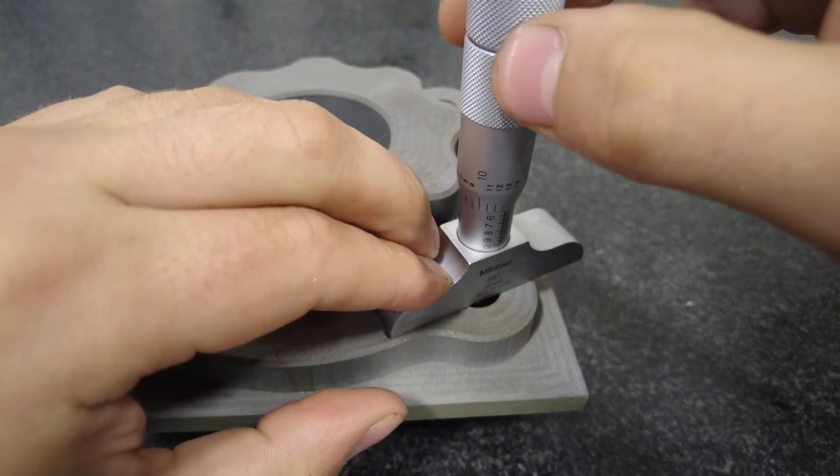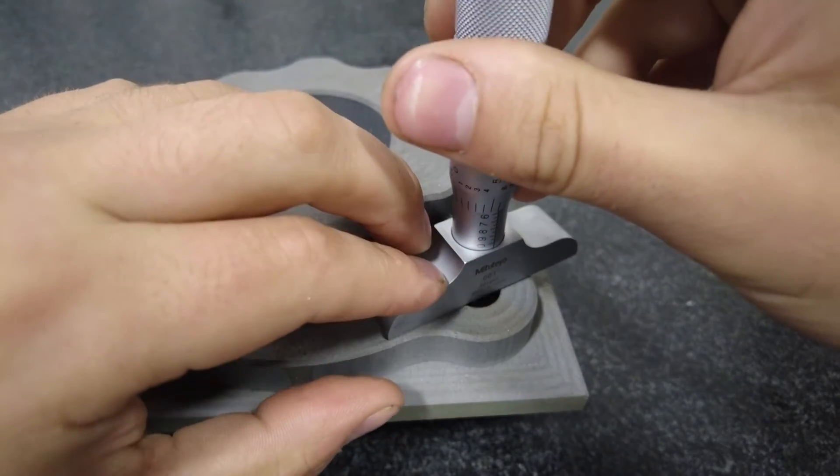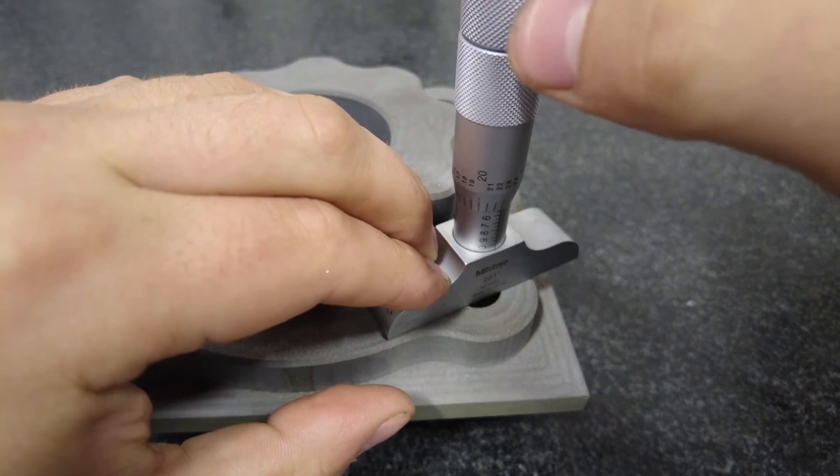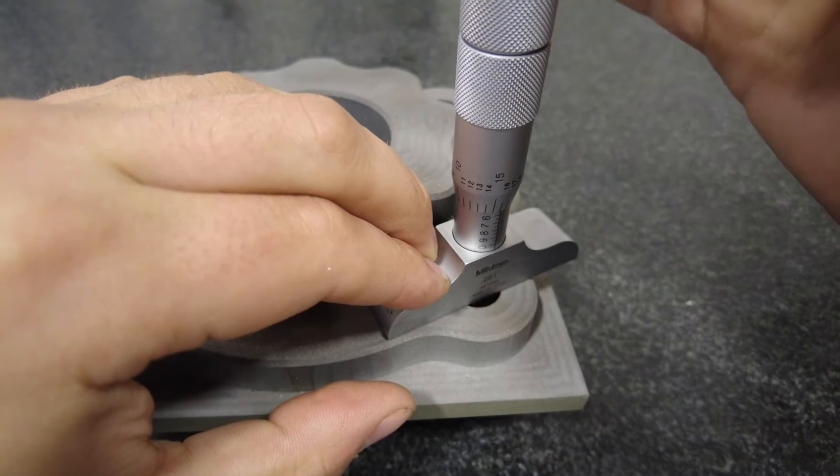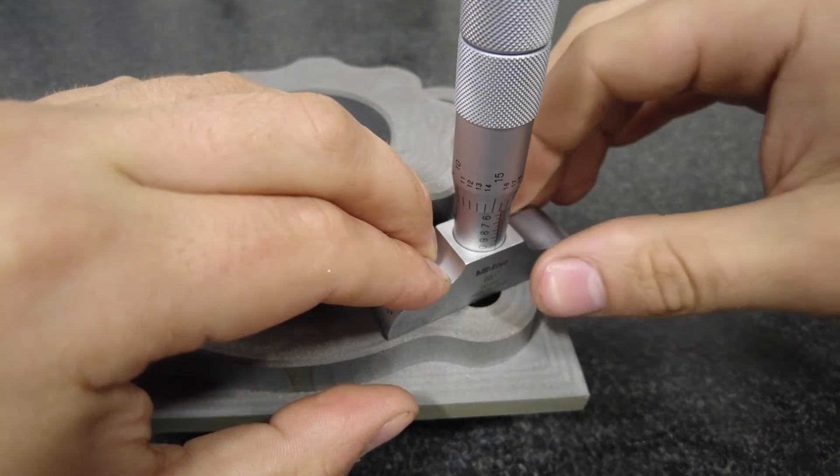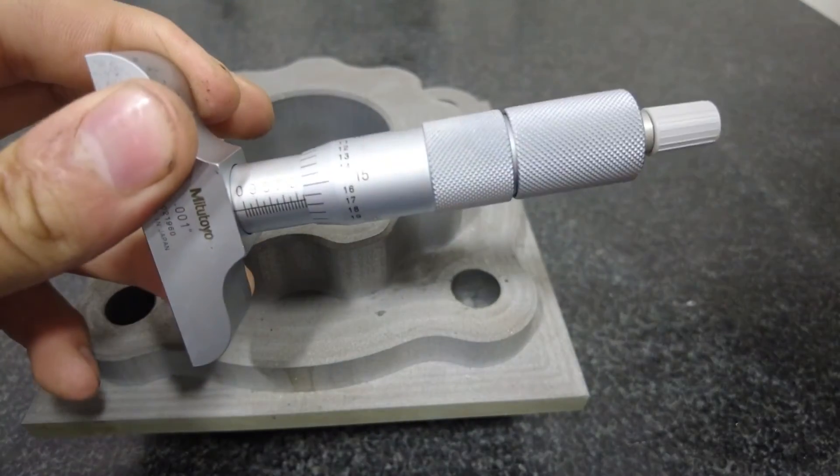When I hit the bottom I want to make sure I don't go too much otherwise when you press it it's going to push the depth mic up. Holding on to the base firmly I'm just going to slowly spin this in until it touches the bottom of the hole. Once I touch the bottom I can use the ratcheting thimble up top. Turn that to make sure we're at the bottom. Then I can take this and I can perform my reading.